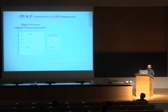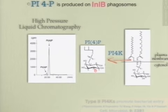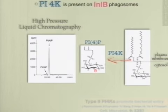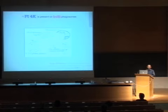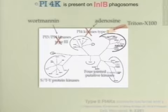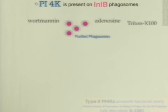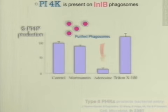PI4P is a signaling molecule which can be produced by several pathways in the cell, but the most straightforward pathway is the phosphorylation of PI by a PI4 kinase. We decided to investigate if PI4 kinases are present at the surface of the InlB phagosomes. There are two main families of PI4 kinases. The type 3 family is very closely related to the type 1 PI3 kinase family, and these kinases can be inhibited by wortmannin. There is another family, the type 2 PI4 kinases, which can be inhibited by adenosine. We incubated our phagosomes in the presence of these compounds and measured the production of PI4P. We were able to show that only adenosine blocks the production of PI4P, which is a signature of type 2 PI4 kinases, indicating that a type 2 PI4 kinase is present at the surface of these compartments.